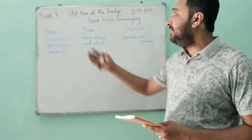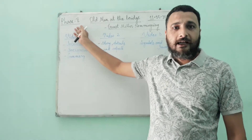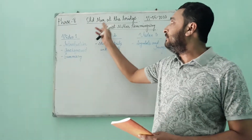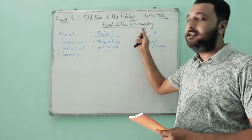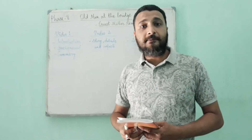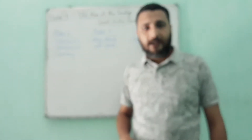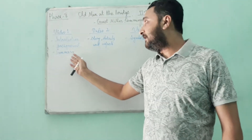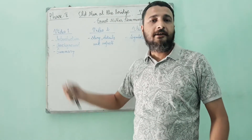Here you will see that we are going to start today Phase 2 of English Literature. Today we are going to deal with and discuss the chapter 'Old Man at the Bridge,' written by Ernest Miller Hemingway. In this phase and part of your lesson, I am going to present you three short videos. In the first video, I will be telling you and discussing the introduction, background and summary of the short story.